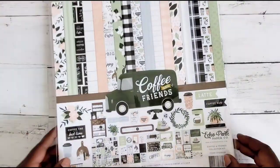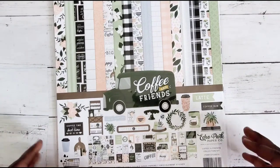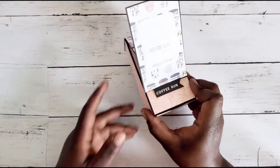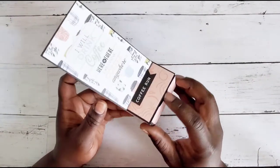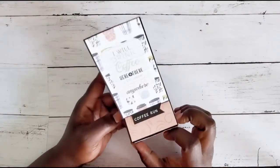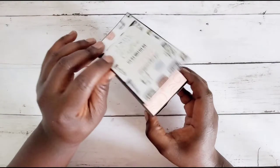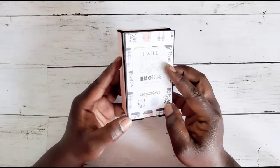Going on with the theme of coffee and friends, I made a cute little K-pod box easel card. So it goes down like this, and on the top of this one it says 'I will drink coffee here and there, I will drink coffee anywhere.'